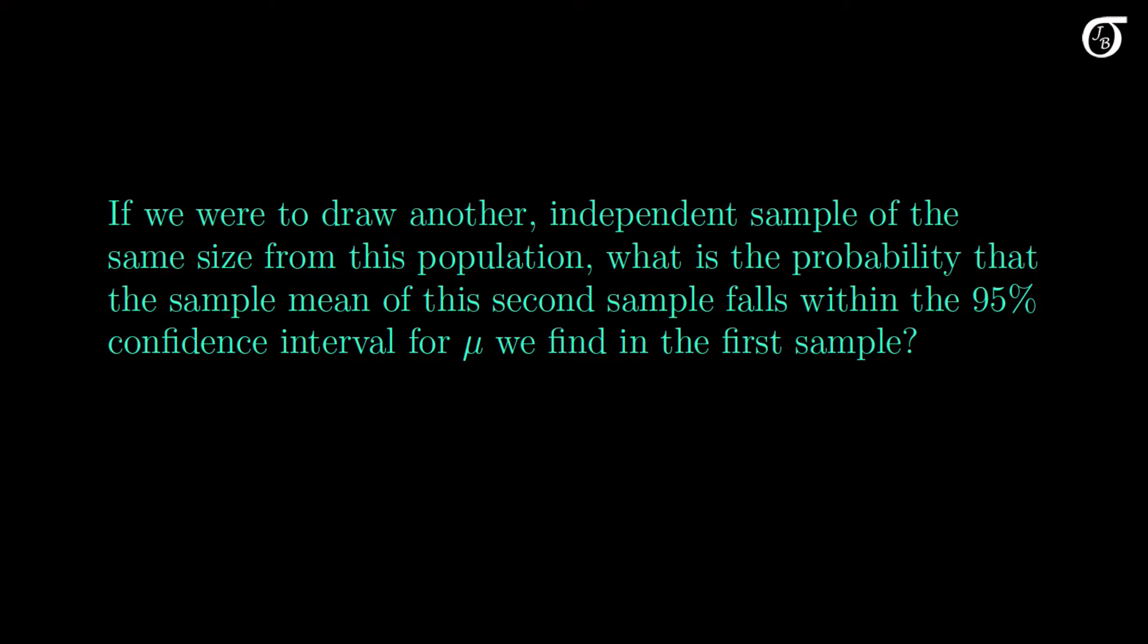The question is, if we were to draw another independent sample of the same size from this population, what is the probability that the sample mean of this second sample falls within the 95% confidence interval for mu that we will find in the first sample? What do you think? 95%? 90%? We can't tell because it depends on n or sigma? Let's find out.